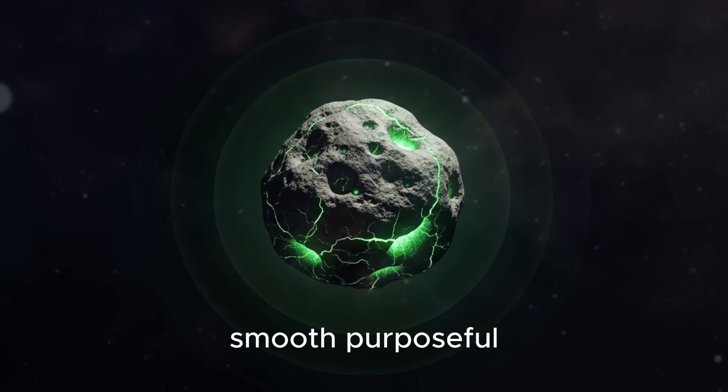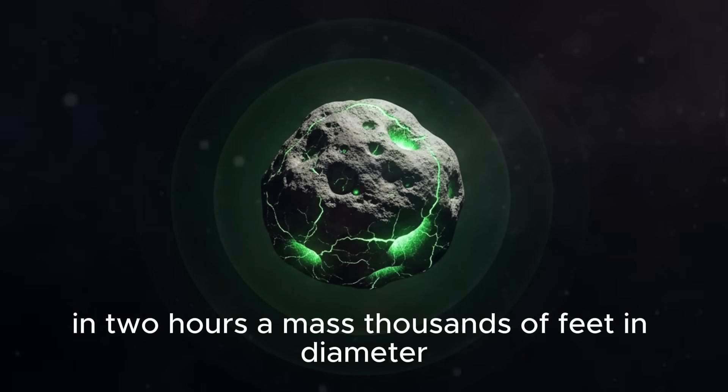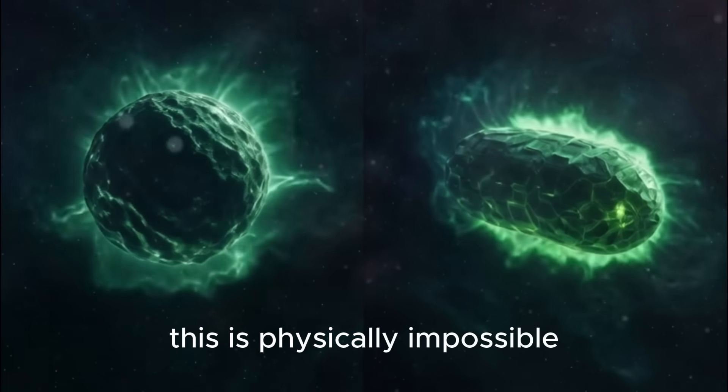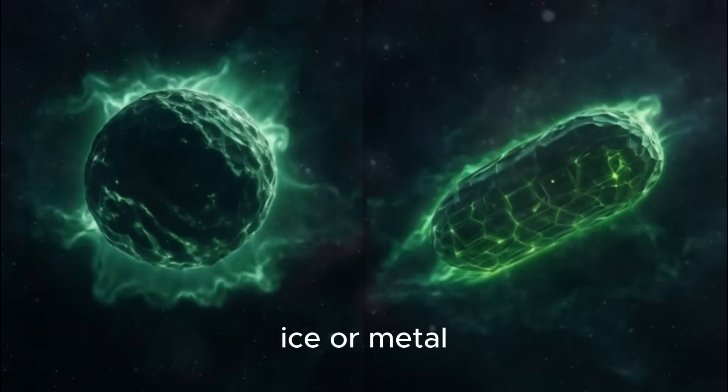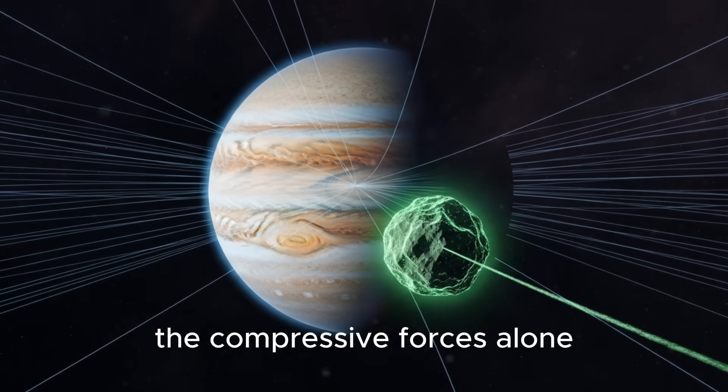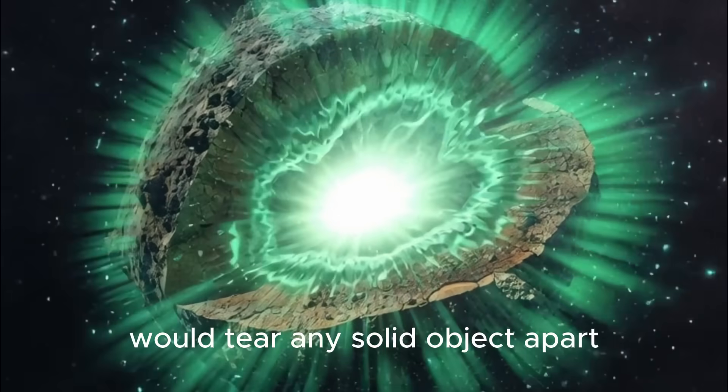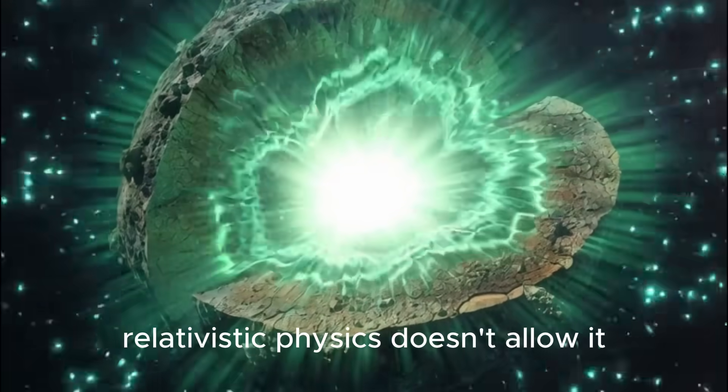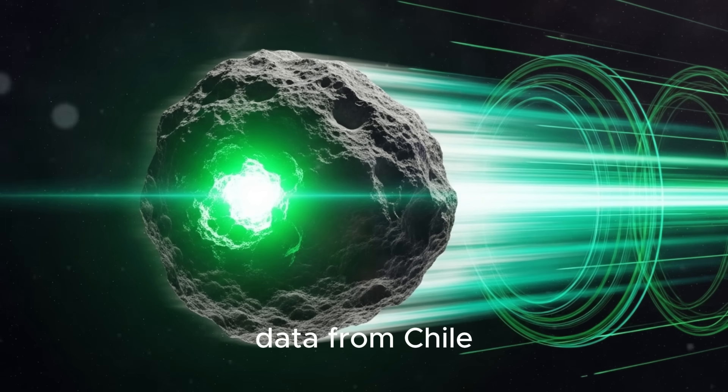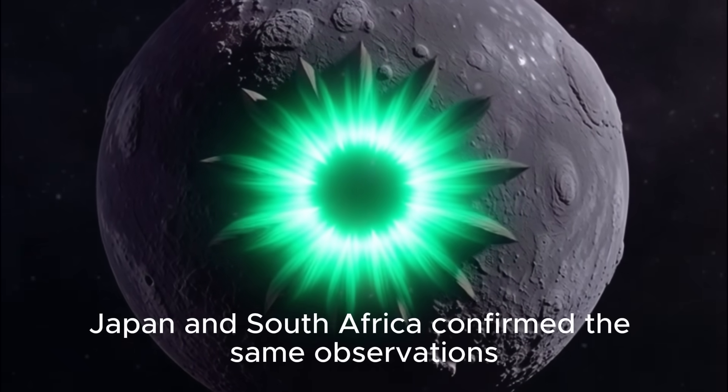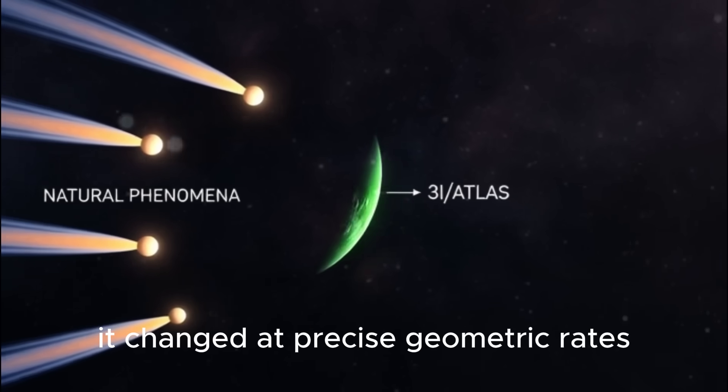Within two hours, the change became undeniable. 3I/ATLAS transformed from a roughly spherical shape into a cylinder - symmetrical, smooth, purposeful. This is physically impossible. No known material - rock, ice, or metal - can sustain rapid deformation without fracturing. Yet the object remained intact. Data from Chile, Japan, and South Africa confirmed the same observations.